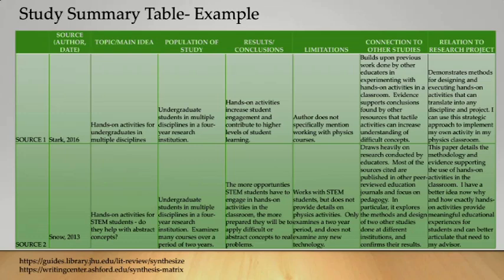This slide is an example of a study summary table. First, you have to indicate the source of information and the date — in particular, you are going to describe the authors who have written the article from where you have taken the information. This is followed by the main topic on which the study was conducted, the population of study, what area on which the study was entirely framed. What were the results and conclusions? What were the limitations of the study? What are the connections of this particular study with other studies, and its relation to the present project?